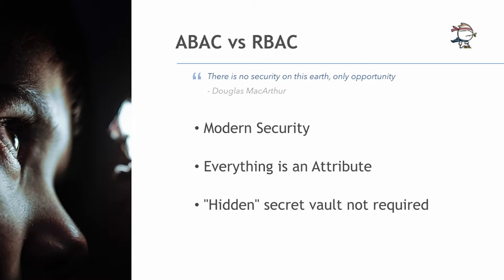Everything is becoming more and more online, which creates challenges. If you have a build system that needs to pull down a key to sign container images, you still need a place to store sensitive data. But do you want to take HashiCorp's Vault and put it publicly on the internet with only standard vault access controls? That's scary, so most people hide these things away. With ABAC, you should be able to expose it to the internet and rely on all the attributes coming together properly to secure the system.